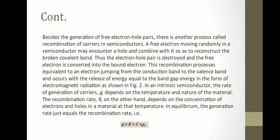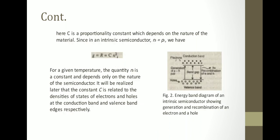In an intrinsic semiconductor, the rate of generation of carriers G depends on the temperature and the nature of the material. The recombination rate R depends on the concentration of electrons and holes at that temperature. In equilibrium, the generation rate equals the recombination rate: G = R = C·Ni·Pi, where C is a proportionality constant that depends on the nature of the material. The constant C is related to the density of states of electrons and holes at the conduction band and valence band edges respectively.